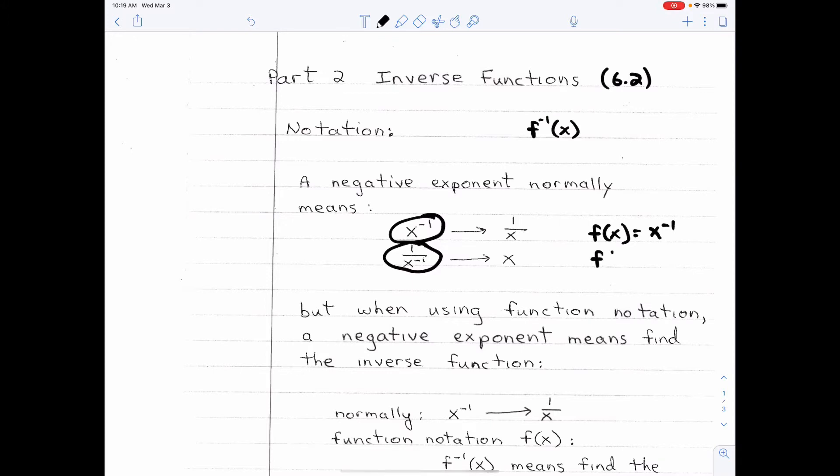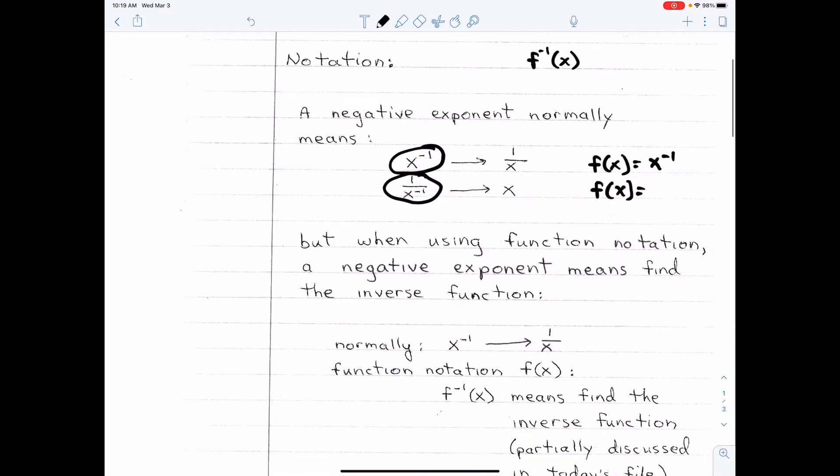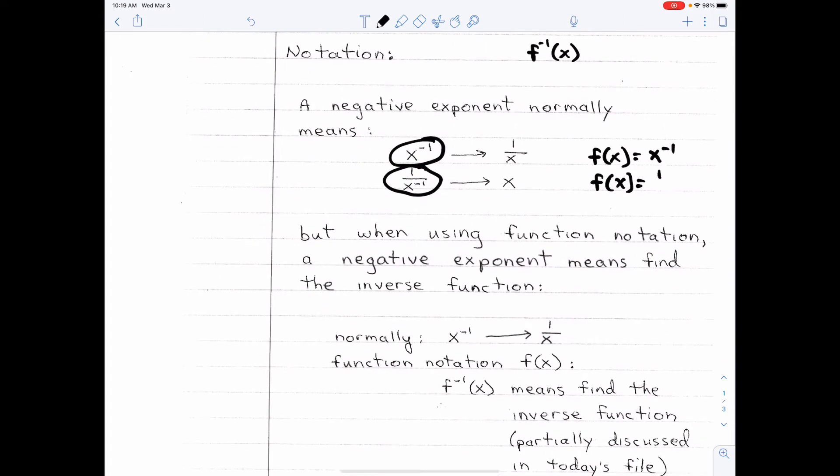If I give you this, notice the negative exponent is not on the function notation symbol. The negative exponent's on the variable, so it means one over x.